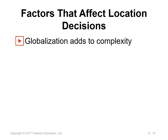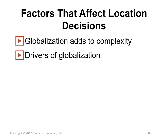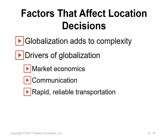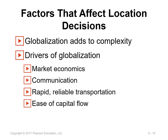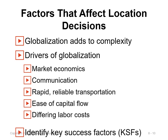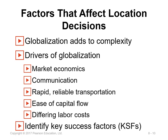Facility location is becoming much more complex with globalization. Globalization has taken place because of market economics, better international communication, more rapid and reliable traveling and shipping, ease of capital flow between countries, and high differences in labor costs. Many firms now consider opening new offices, factories, retail stores, or banks outside their home country. Location decisions now transcend national borders and are no longer limited to the national level only.